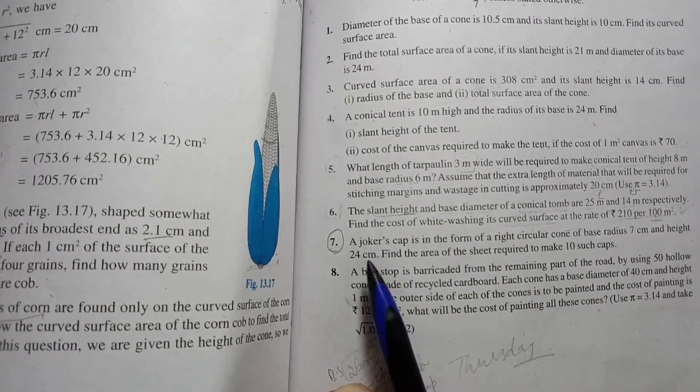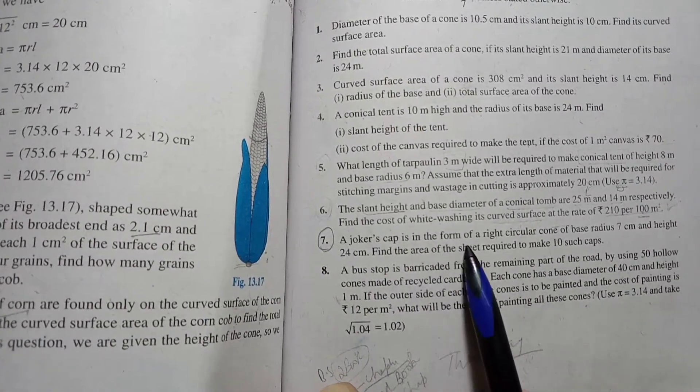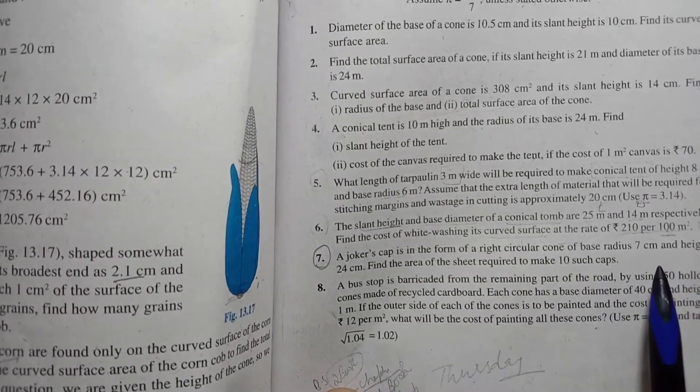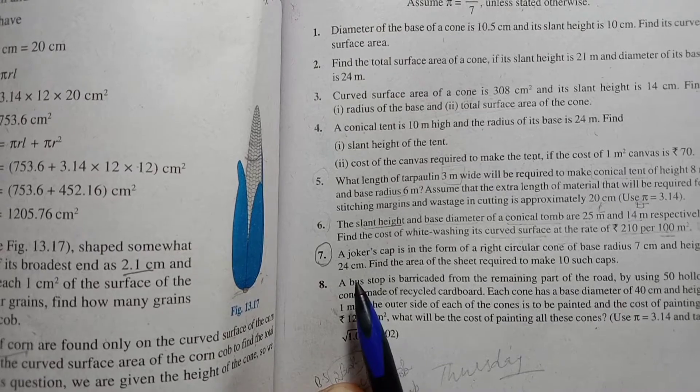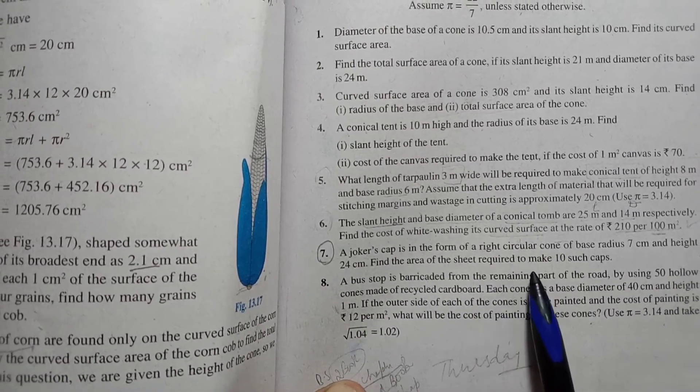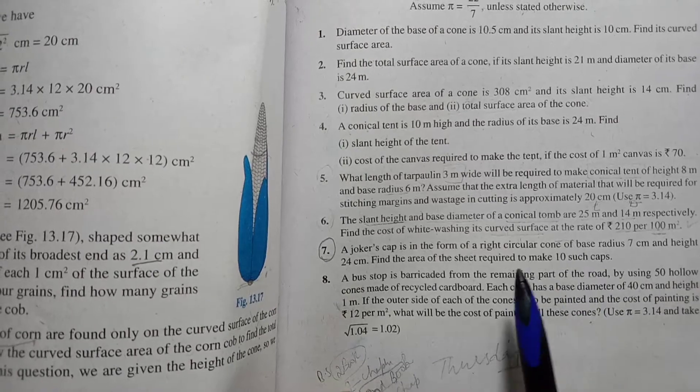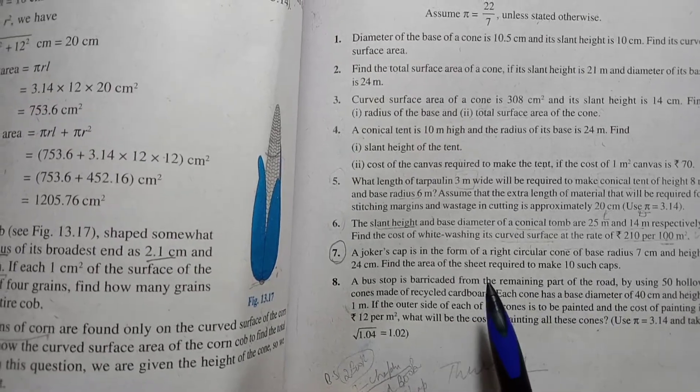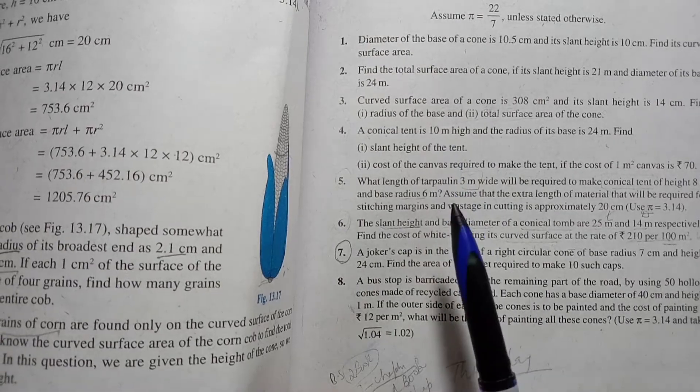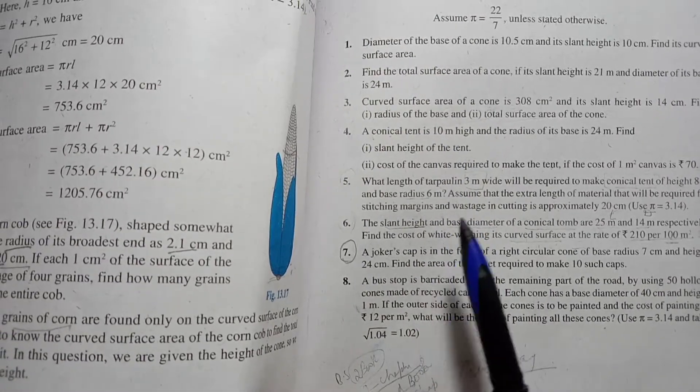Reading the question statement: A joker's cap is in the form of a right circular cone of base radius 7 cm and height 24 cm. Find the area of the sheet required to make 10 such caps. Very small question, based on the six questions we found earlier.